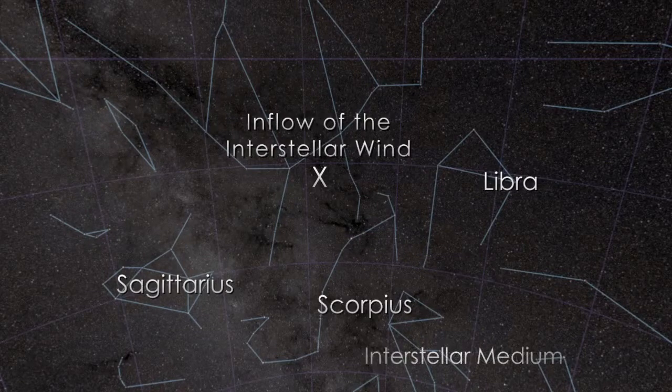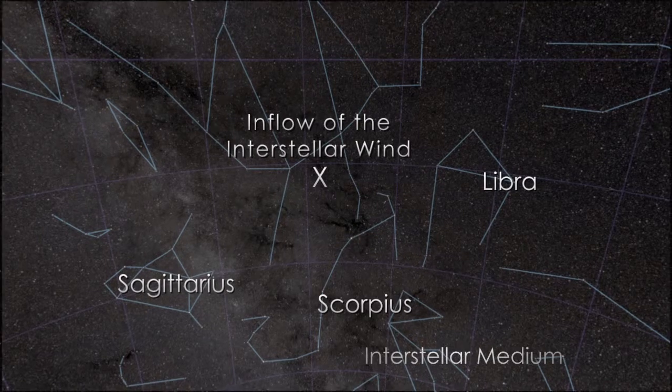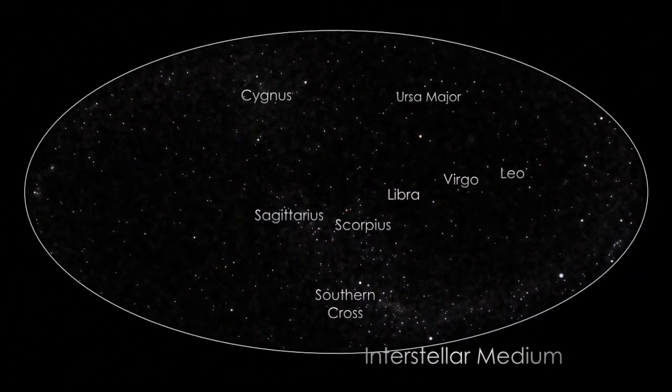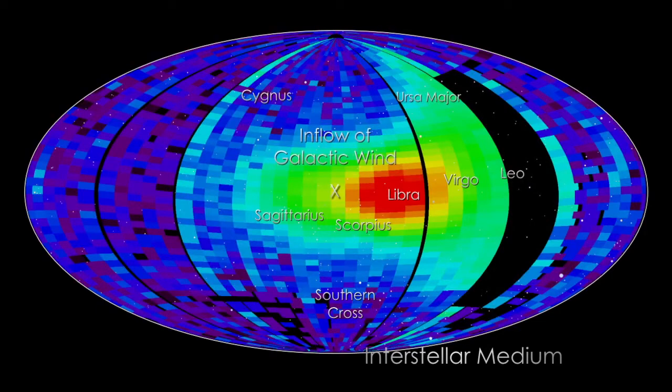IBEX has now made the first direct measurements of hydrogen, oxygen, and neon from outside the solar system. The measurement of these atoms has enabled scientists to get a better grasp on the environment around our solar system.